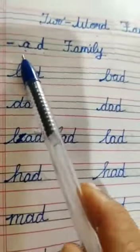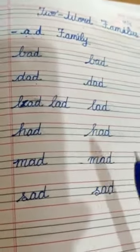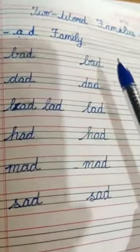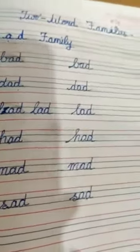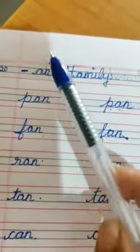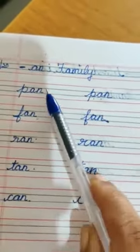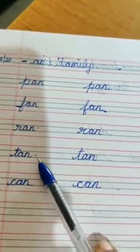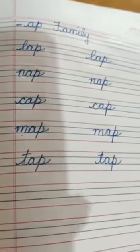We did the AD family and we got many words: bad, dad, lad, had, mad and sad. And we wrote it three times each. Then we went on to the AN family: pan, fan, ran, tan, can. AP family: lap, nap, cap, map, tap.